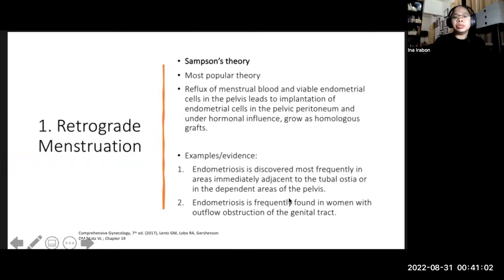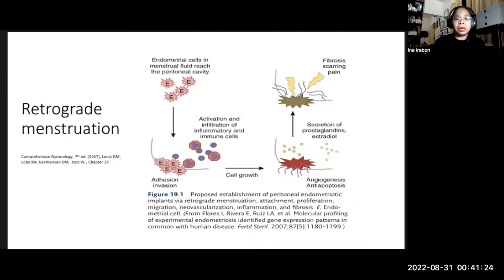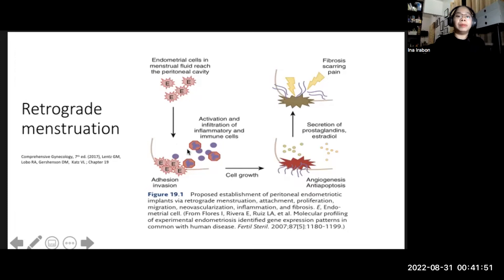Evidence supporting Sampson's theory includes that endometriotic lesions are discovered most frequently in areas adjacent to the tubal ostia or in dependent areas of the pelvis, and are frequently found in women with outflow obstruction of the genital tract. In the proposed mechanism, endometrial cells in peritoneal fluid are attacked by immune and inflammatory cells. This activates the endometriotic cells, leading to cell growth and angiogenesis. These implants secrete prostaglandins and produce estradiol via their own aromatase system, ultimately producing fibrosis, scarring, and pain.